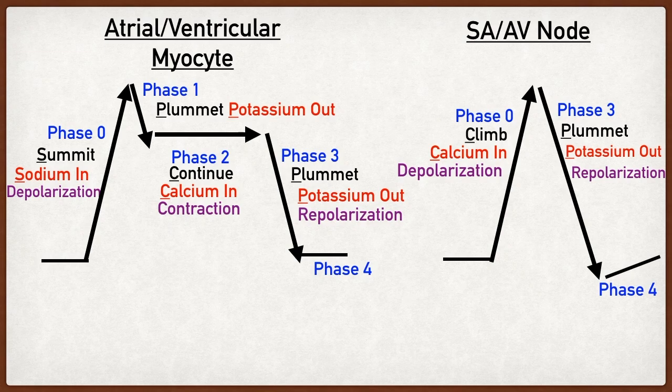We discussed in a previous video everything you need to know about cardiac action potentials. We used a simple catchphrase to remember the different phases along with the ion channels involved. For the non-pacemaker cardiac myocytes, including those of the atrium and ventricles that lead to contraction, we used the 'summit, plummet, continue, plummet' catchphrase. For the pacemaker cells, including those of the SA node and AV node that lead to conduction, we used the 'climb and plummet' catchphrase. I highly recommend checking that video out — it will help make more sense of antiarrhythmics and how they work.